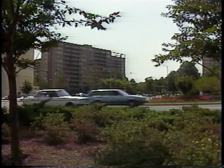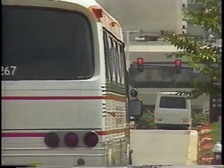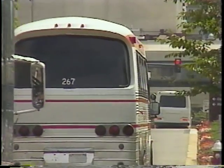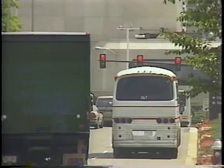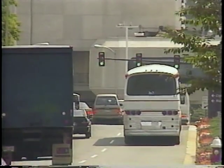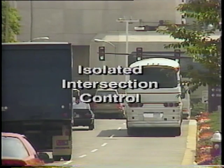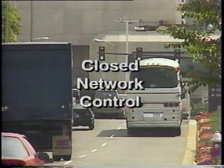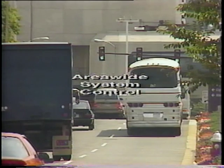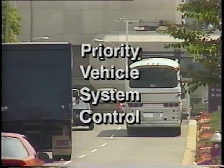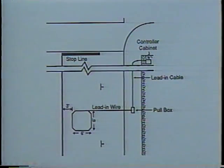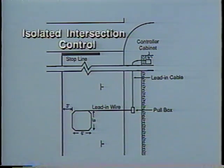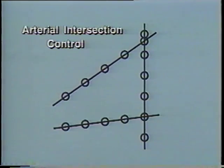Today, detectors are used almost everywhere there are moving vehicles. The most common use of detectors is still on city streets where most intersections are signalized. These most common detector applications fall into six categories: isolated intersection control, arterial intersection control, closed network control, area-wide system control, priority vehicle system control, and pedestrian signal control.